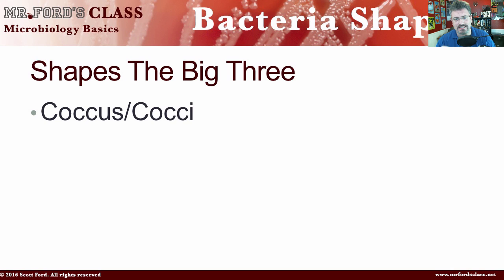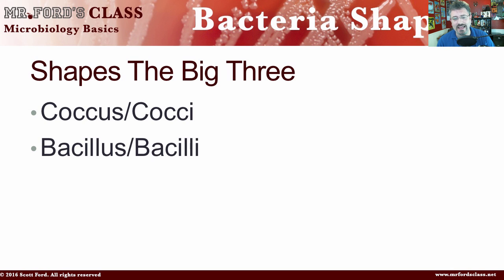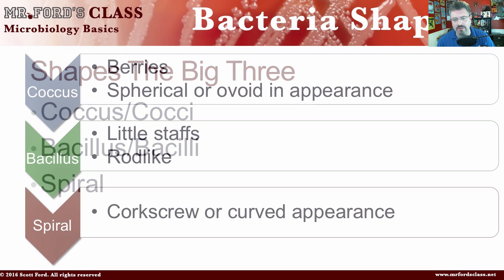What are the Shapes of Bacteria? Well, there are three big shapes, and I like to think of CBS — like the television network. C is cocci, B is bacilli, and S is spirilli. So: cocci, bacilli, and spirilli.